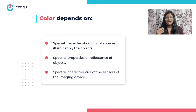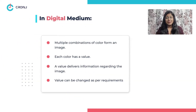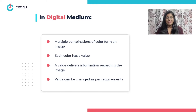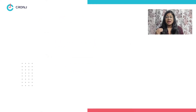Examples may include an object's shape, texture, smoothness, and more. In the digital medium, multiple combinations of colors form an image, and each color has its own value which delivers specific information regarding the image. Moreover, we can change these values as per our requirements.